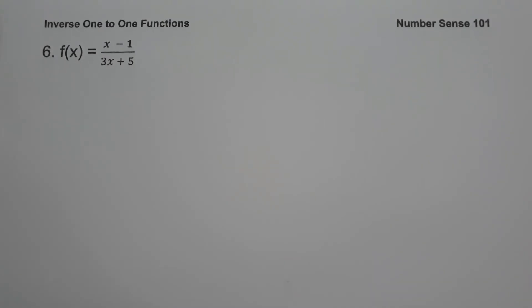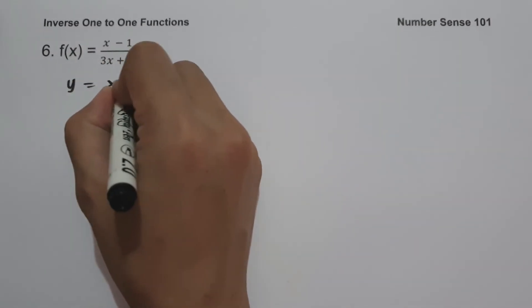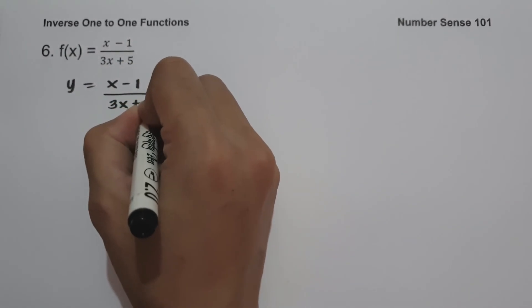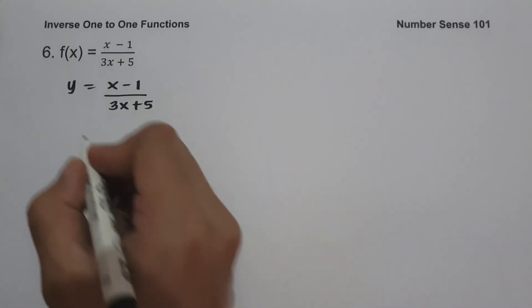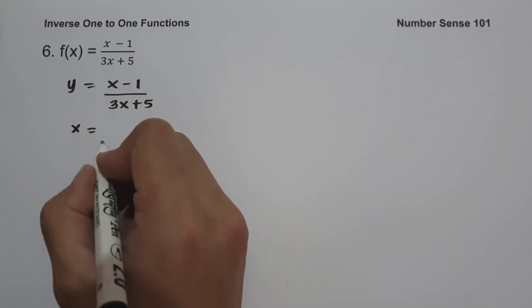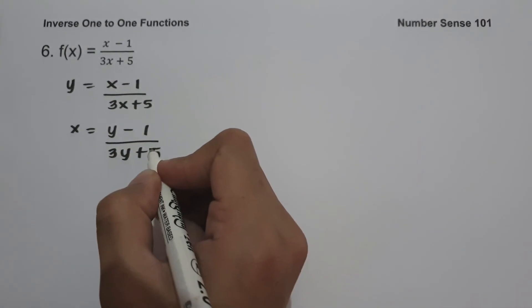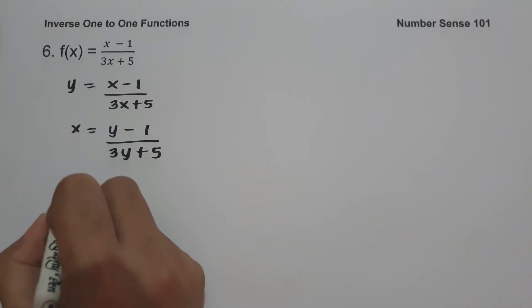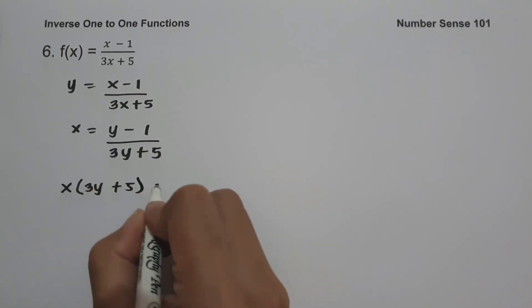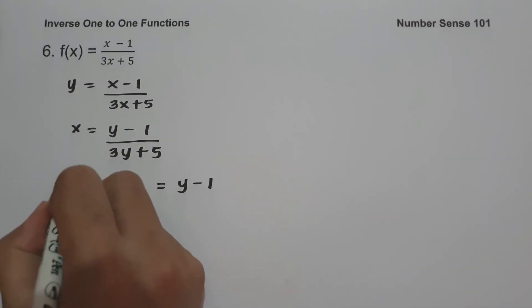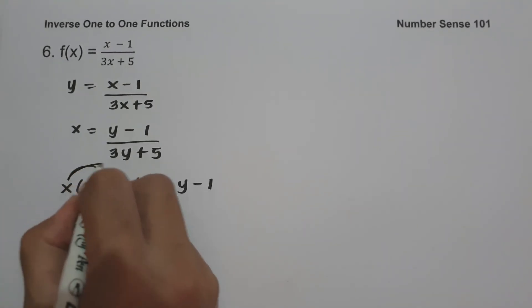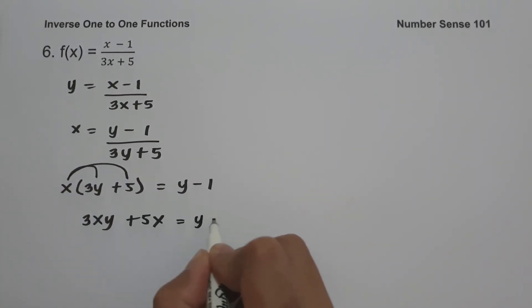On our last example, f(x) = (x - 1)/(3x + 5). Write the function as y = (x - 1)/(3x + 5). Interchange x and y variables, giving x = (y - 1)/(3y + 5). Solve for y: multiply x by (3y + 5) equals y - 1. Expanding: x·3y = 3xy and x·5 = 5x, so 3xy + 5x = y - 1.